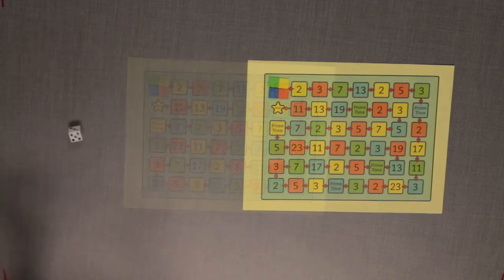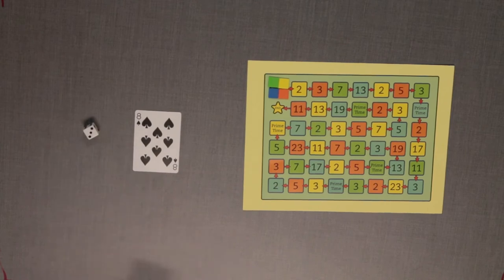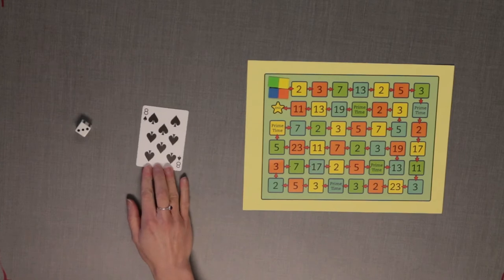Roll one die and turn over one card. The die represents the tens digit and the card represents the units digit. This is your target number.